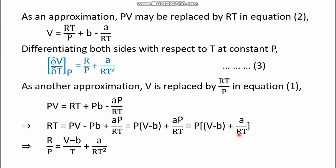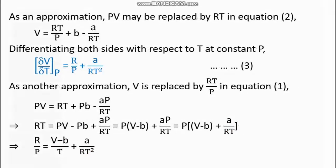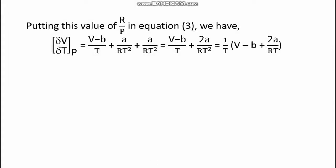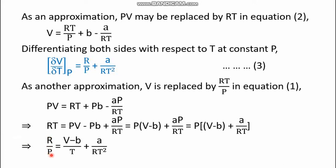Continuing the rearrangement, p is taken as common from the expression (v − b + a/RT). Then taking p to the left-hand side and t to the right-hand side, on the left we get R/p. On the right, dividing through by t gives: (v − b)/t + a/RT². Thus we obtain the value of R/p, which needs to be substituted back into equation number three.